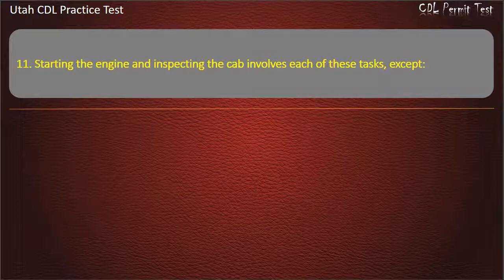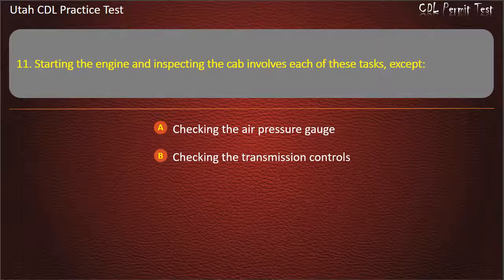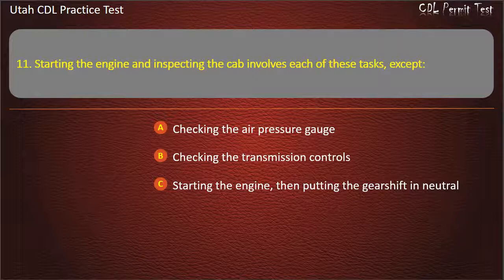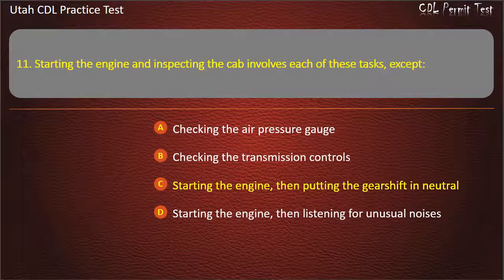Question 11. Starting the engine and inspecting the cab involves each of these tasks, except: Checking the air pressure gauge. Checking the transmission controls. Starting the engine, then putting the gearshift in neutral. Starting the engine, then listening for unusual noises. Answer: Starting the engine, then putting the gearshift in neutral.